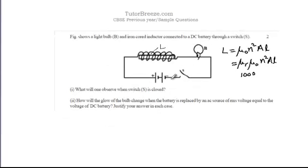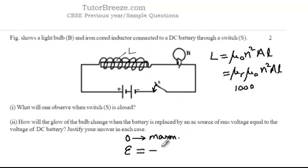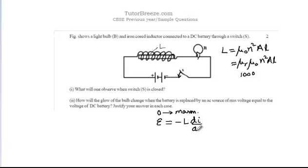Now let's answer the first part of the question. When the switch is closed and a current flows in the circuit, the current is going to grow from 0 to a maximum value. This growing current will produce an induced EMF which is given by -L di/dt. As long as the current is changing, you have an induced EMF. The negative sign indicates this is a back EMF that opposes the cause which produces it, which in this case is the DC battery.